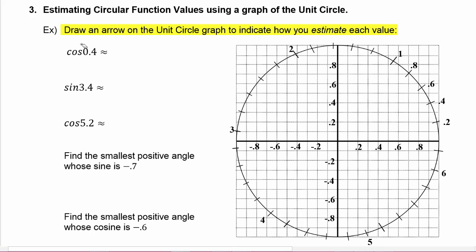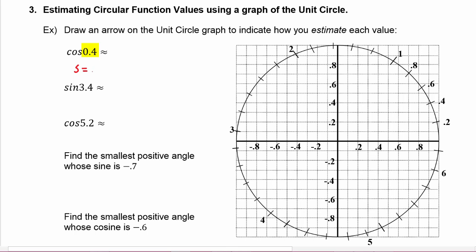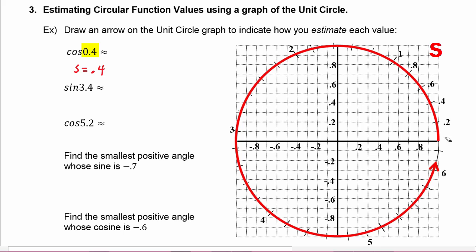In this example we're being asked to draw an arrow on the unit circle graph to indicate how you estimate each value. This first circular function is the cosine of 0.4. Remember, s equals 0.4, and when we look on the unit circle, s is the variable that represents arc length, so s is going around the circle. We travel along the arc length until we get to 0.4, which is right here. Because this is asking us for the cosine of 0.4, we know that's going to come from the x-value.